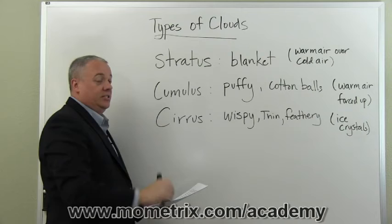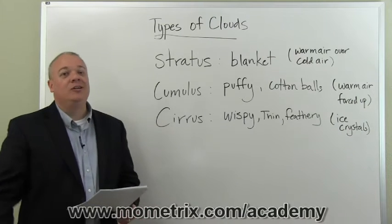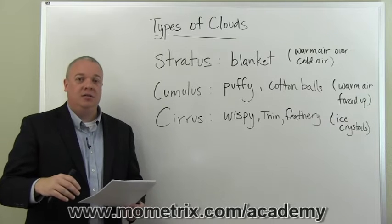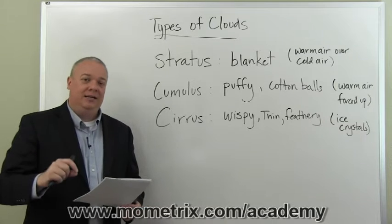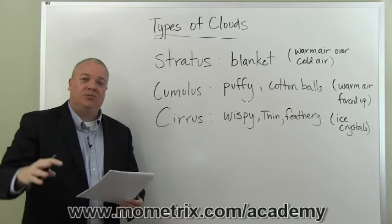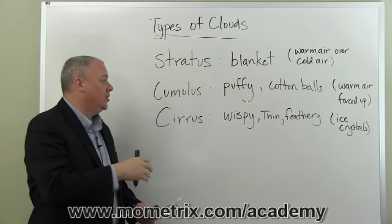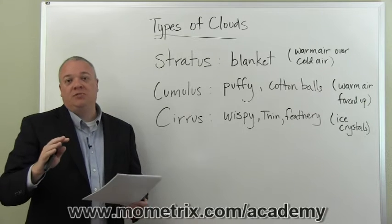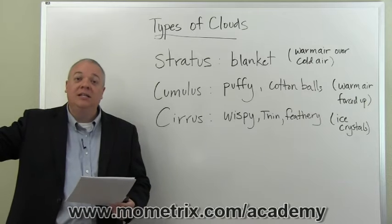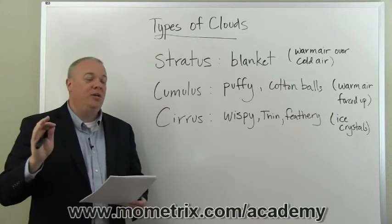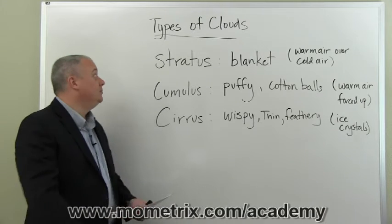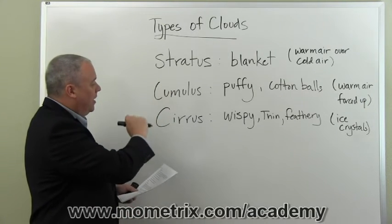Finally, the last type of cloud we'll talk about today are cirrus clouds. Cirrus clouds are extremely high-altitude clouds — seven kilometers above the surface of the earth — and essentially they are ice crystals at that level. The sunlight passes right through them. Here you need to think: wispy, thin, feathery, as if someone had taken a paintbrush and just scraped it across the sky. Thin, wispy, feathery — and remember, they are ice crystals at that level.